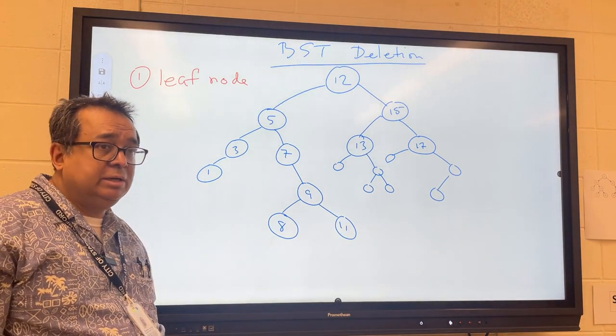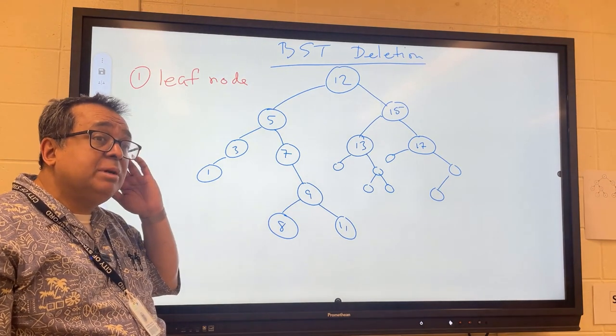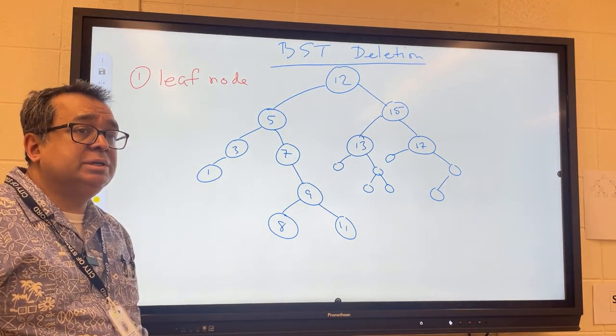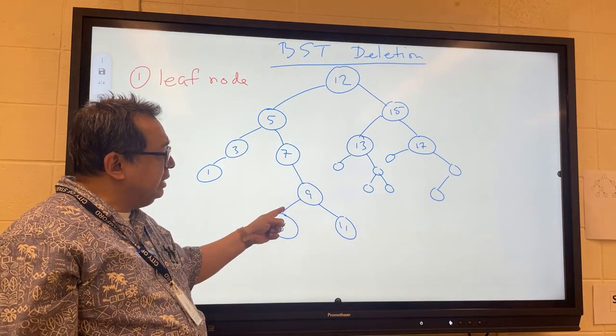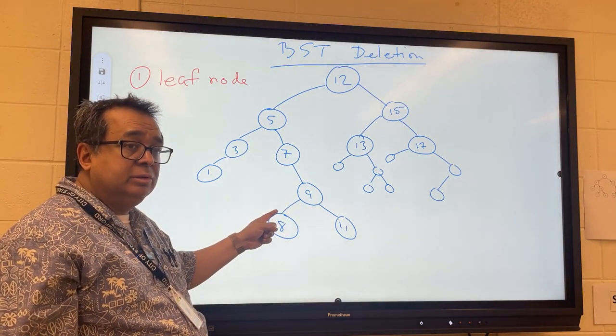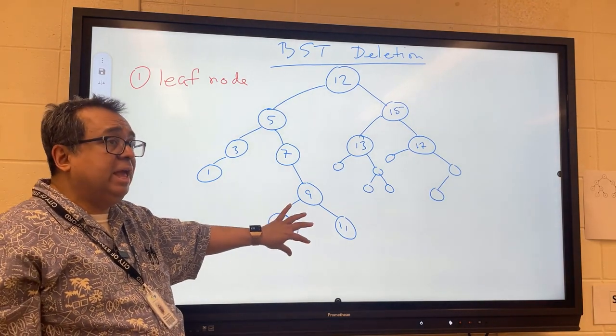It will be easy. What would I have to change in terms of the pointer in order to delete the eighth node? The left child of nine would be set to null.